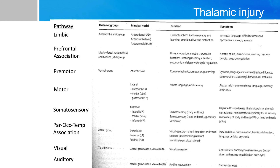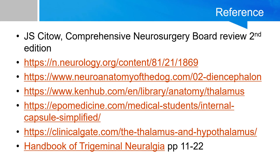For example, knowing that the ventral posterior nucleus relays somatosensory information means that a lesion will lead to thalamic pain syndrome or contralateral hemi-anesthesia. References are listed, and I hope you find this helpful. See you next time.